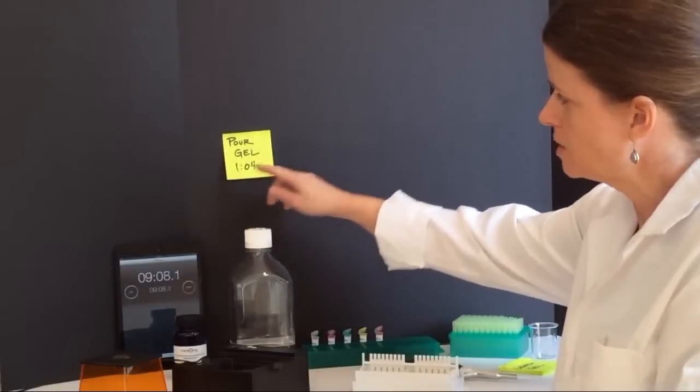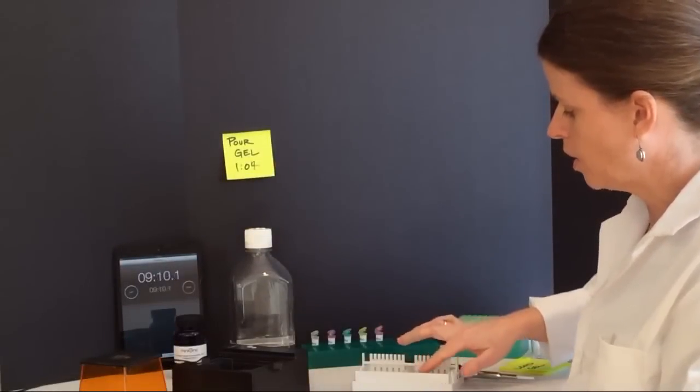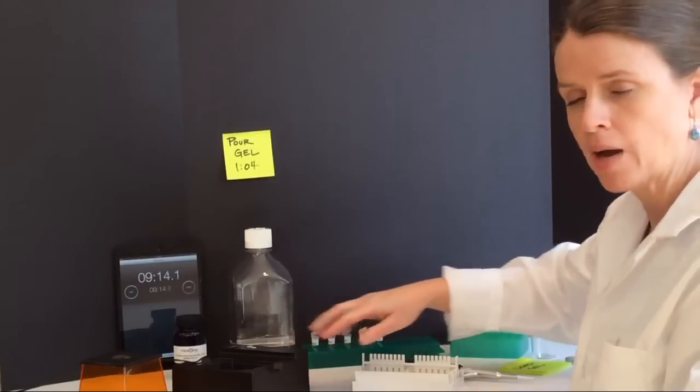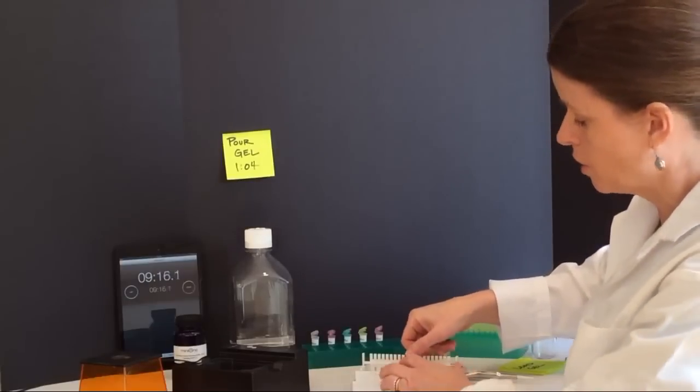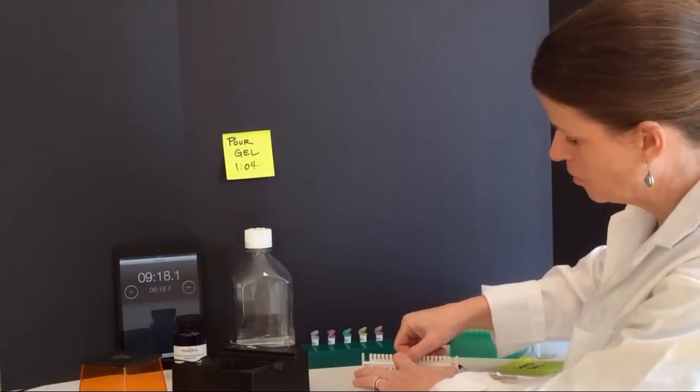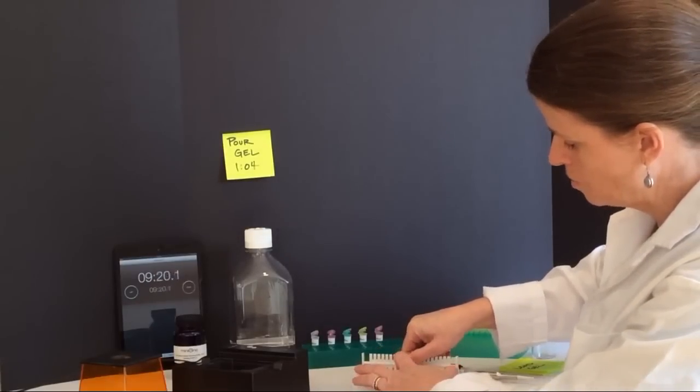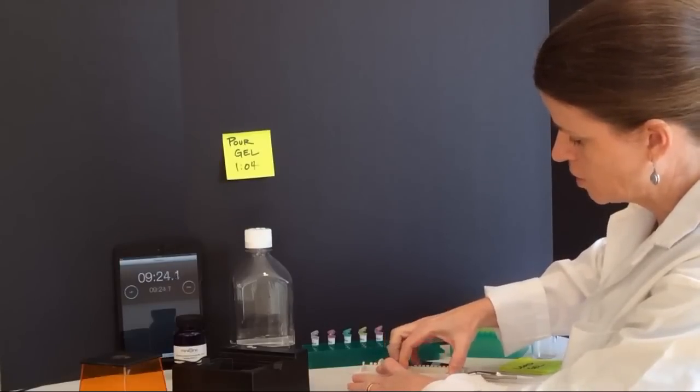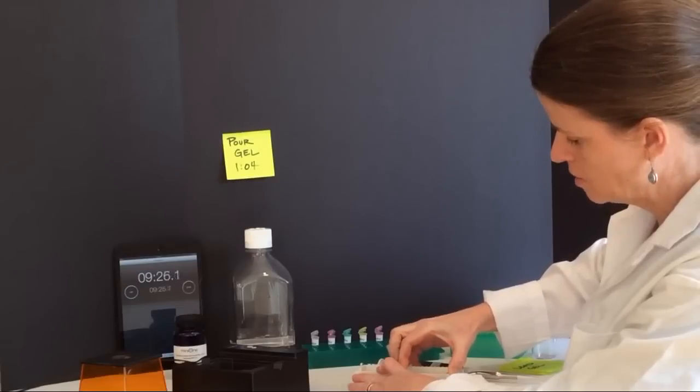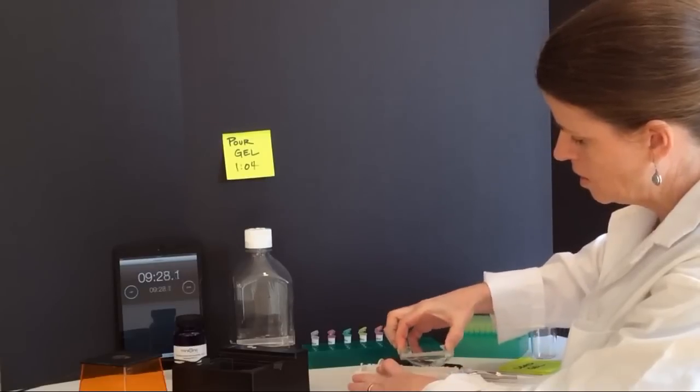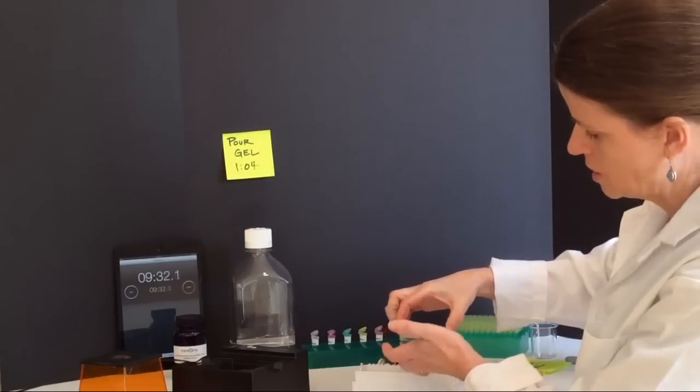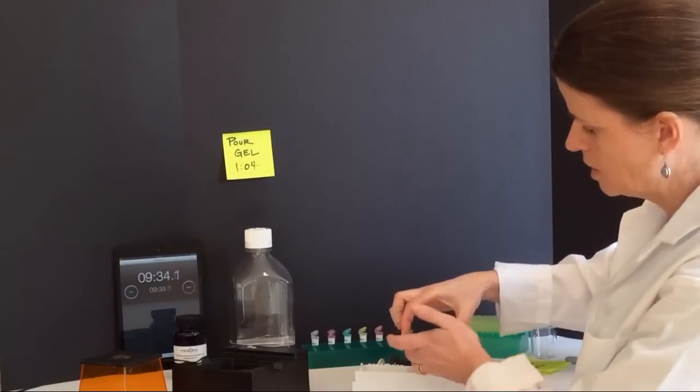It's been about 8 minutes since we've poured our gel and our gel is solidified and we're ready to actually begin to set up our apparatus and load our gel. I'm going to simply remove our comb and then lift our gel tray out of the casting tray. Sometimes you'll notice a little of the gel will go underneath the tray and I can just simply peel that off and dispose of that.